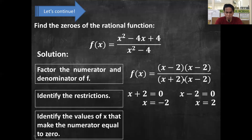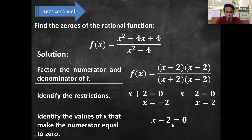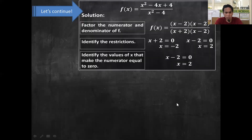Next, identify the values of x that will make the numerator equal to 0. Since the numerator factors as (x − 2) and (x − 2), we equate x − 2 = 0. Eliminating negative 2 by adding 2 to both sides gives x = 2.